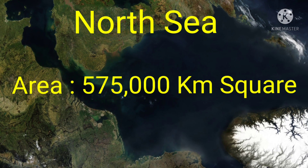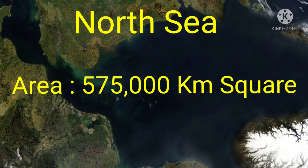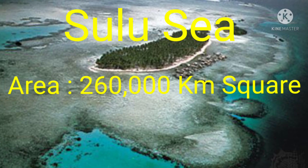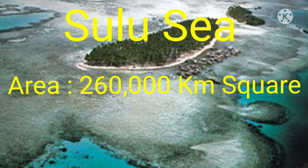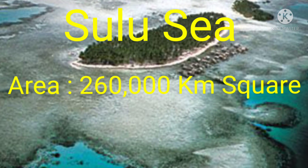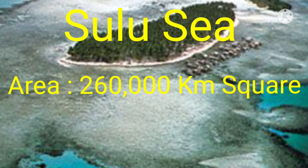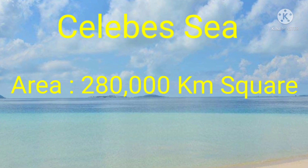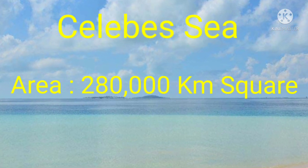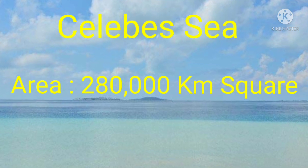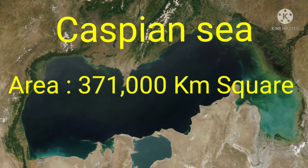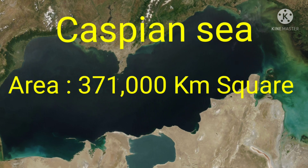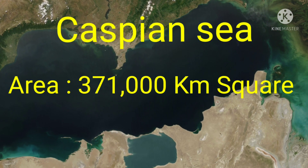North Sea — the area of the North Sea is 575,000 km². Sulu Sea — the area of the Sulu Sea is 260,000 km². Celebes Sea — the area of the Celebes Sea is 280,000 km². Caspian Sea — the area of the Caspian Sea is 371,000 km².